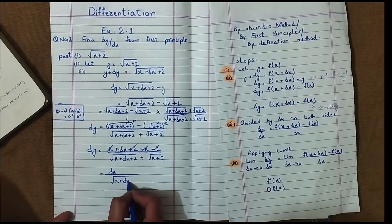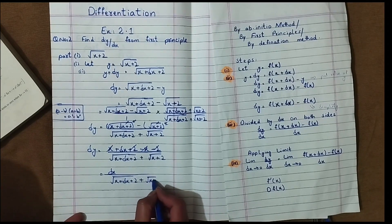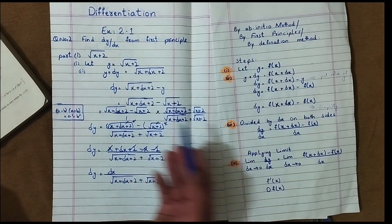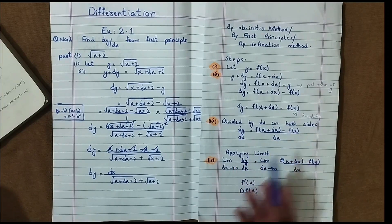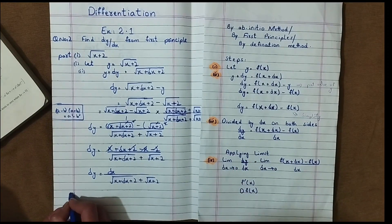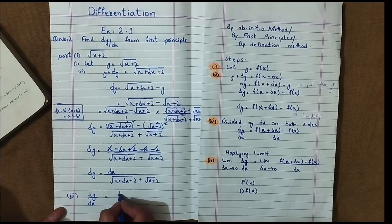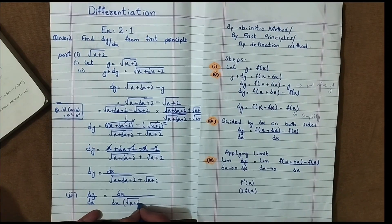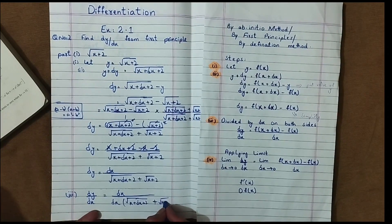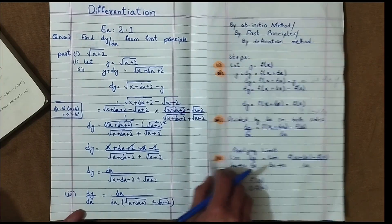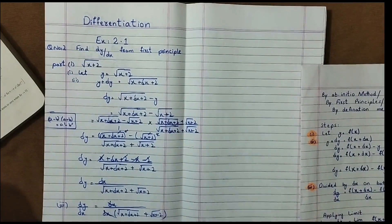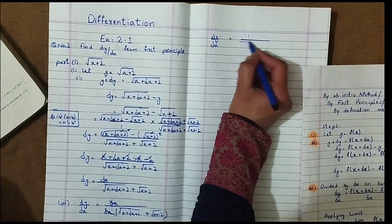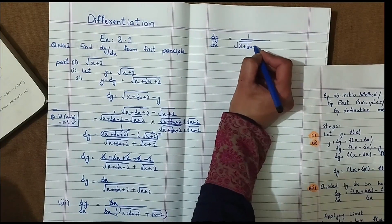Now we have delta y. Step 3: divide both sides by delta x. Delta y over delta x equals delta x over delta x times 1 over under root x plus delta x plus 2 plus under root x plus 2. The delta x in the numerator cancels with delta x in the denominator.